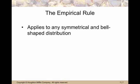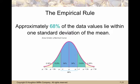There is something called the empirical rule and it applies to any normal bell, symmetrical and bell-shaped distribution. Approximately 68% of the data values lie within one standard deviation of the mean. So between where those two inflection points occur, you're going to capture about 68% of the observations.